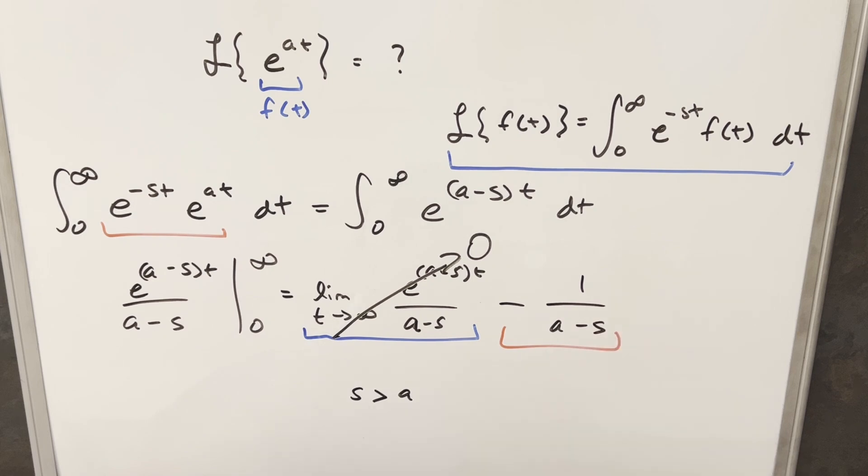But then all we're left with is this piece right here. And what I can do is just rewrite this to clean it up a little bit. We can just distribute in this minus sign and reverse this, so we can write this as 1 over (s minus a). And we're just going to have this condition here that s needs to be greater than a.